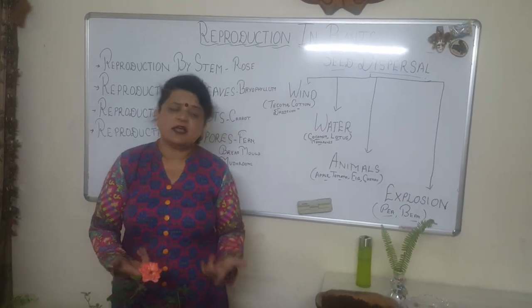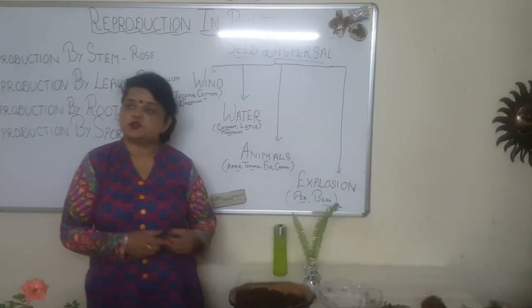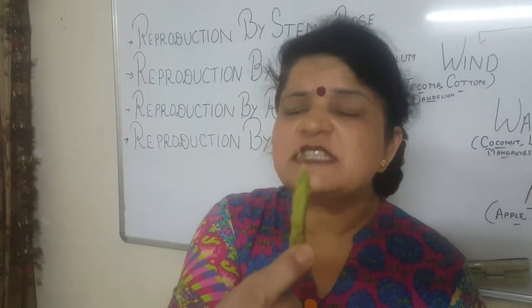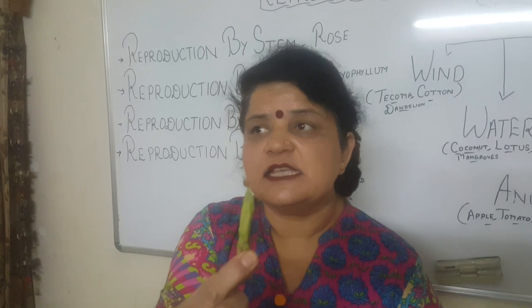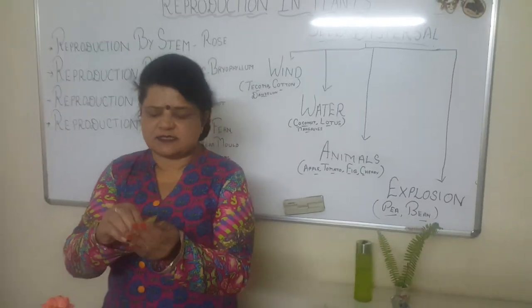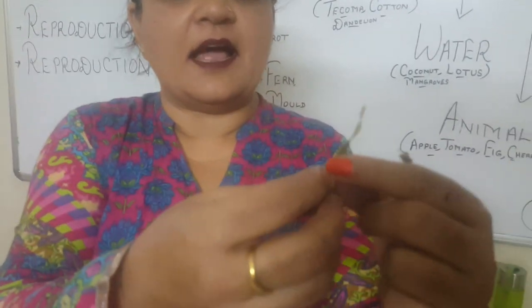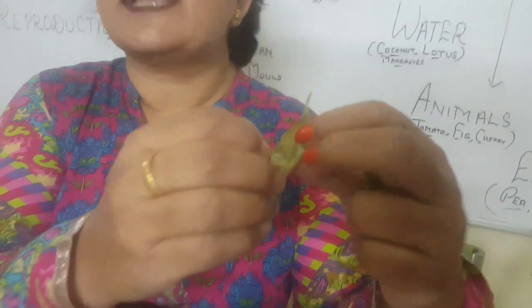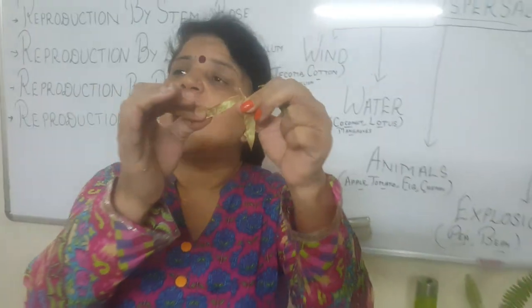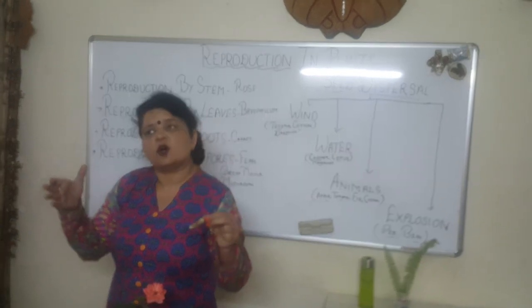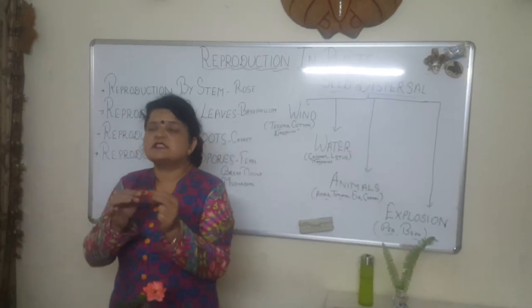Let's look at another kind of seed dispersal — dispersal by explosion. You might have seen a pea plant. Due to sunlight and drying, the pea pod gets ruptured and splits into two parts. The seed inside the pod is thrown out with great pressure, travels a certain distance, falls on the soil, and starts germinating. This is dispersal by explosion.